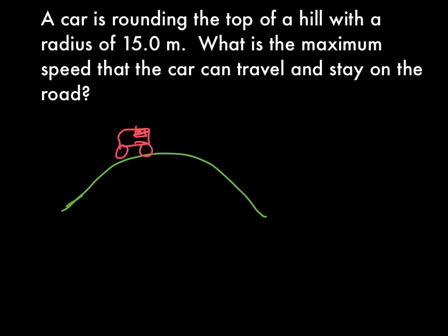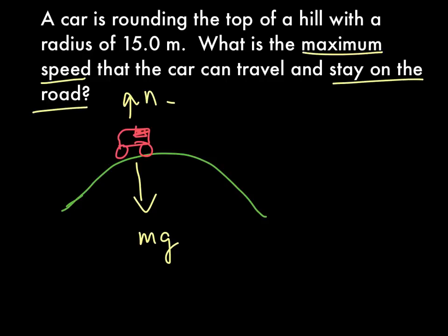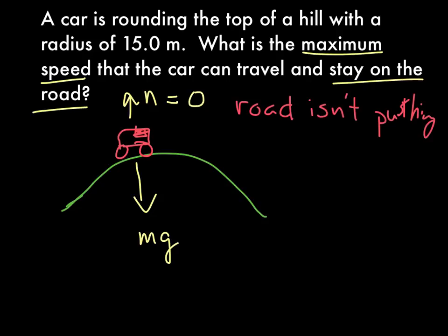You've got this red car going across, and the question is: what is the maximum speed the car can travel and stay on the road? If we draw the force diagram, we know mg acts downward and the road pushes back with a normal force. Here's the key: when looking for the maximum speed to stay on the road, the normal force goes to 0 — the road isn't pushing on the car. This means the car is going to feel weightless, like at the top of a roller coaster when your stomach feels like it's going to fall out.